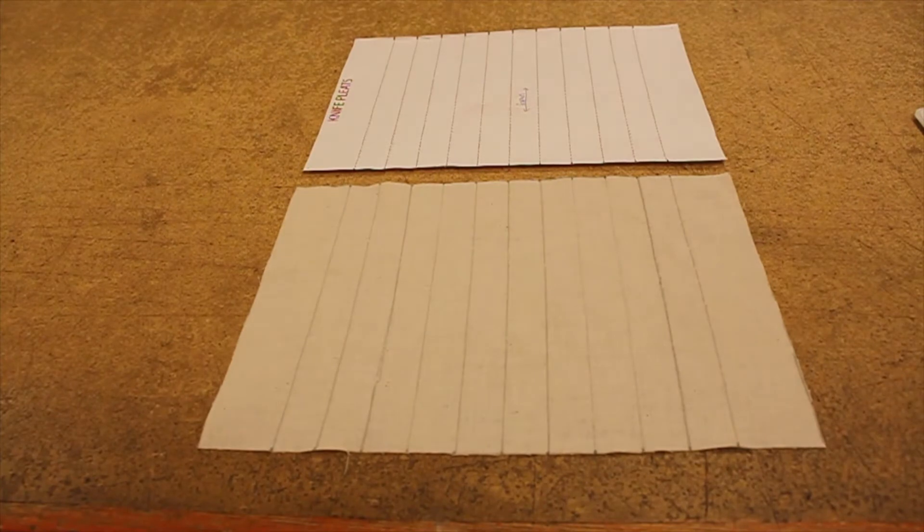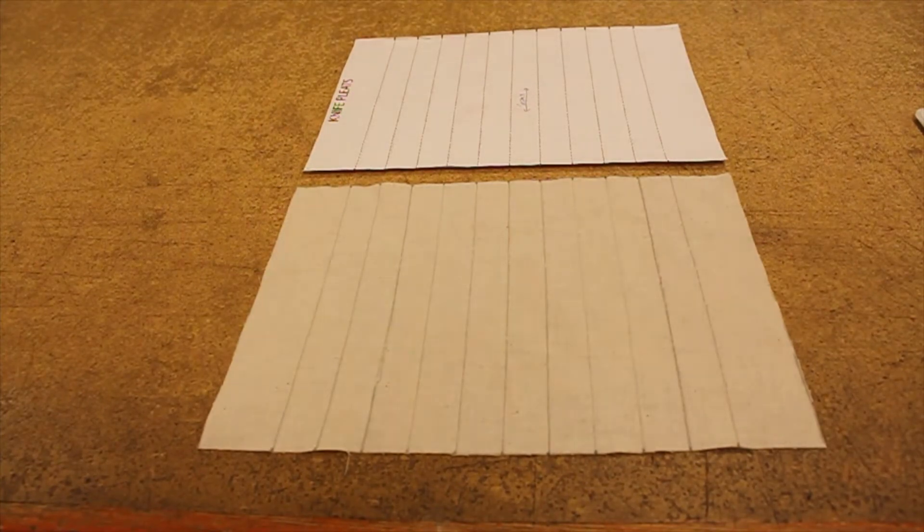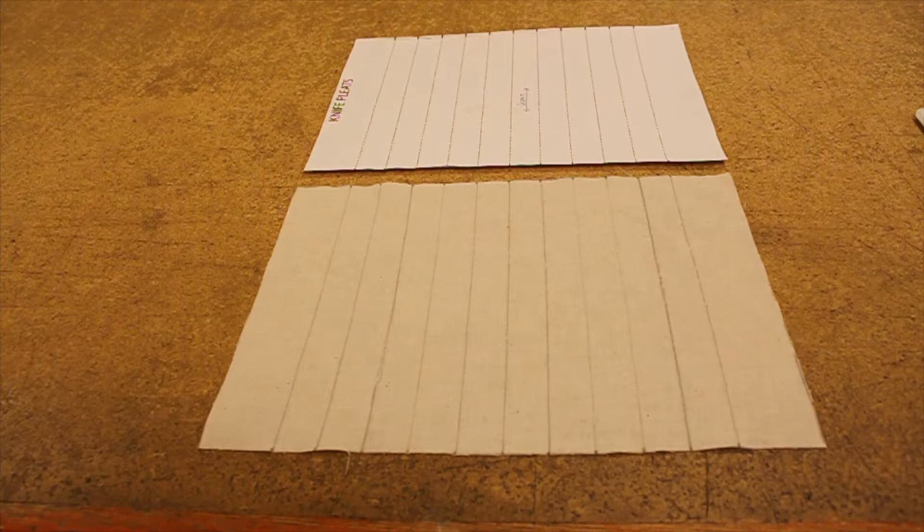Once you have finished drawing all your lines and you cut out your fabric, this is what it should look like. And then we're going to go ahead and take this over to the ironing board.